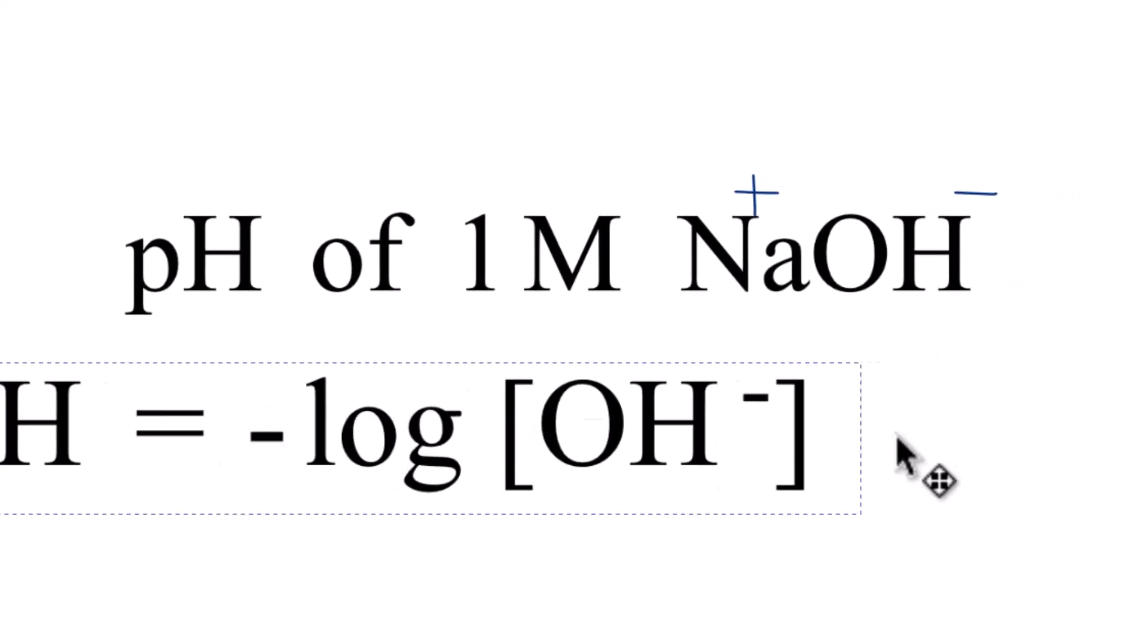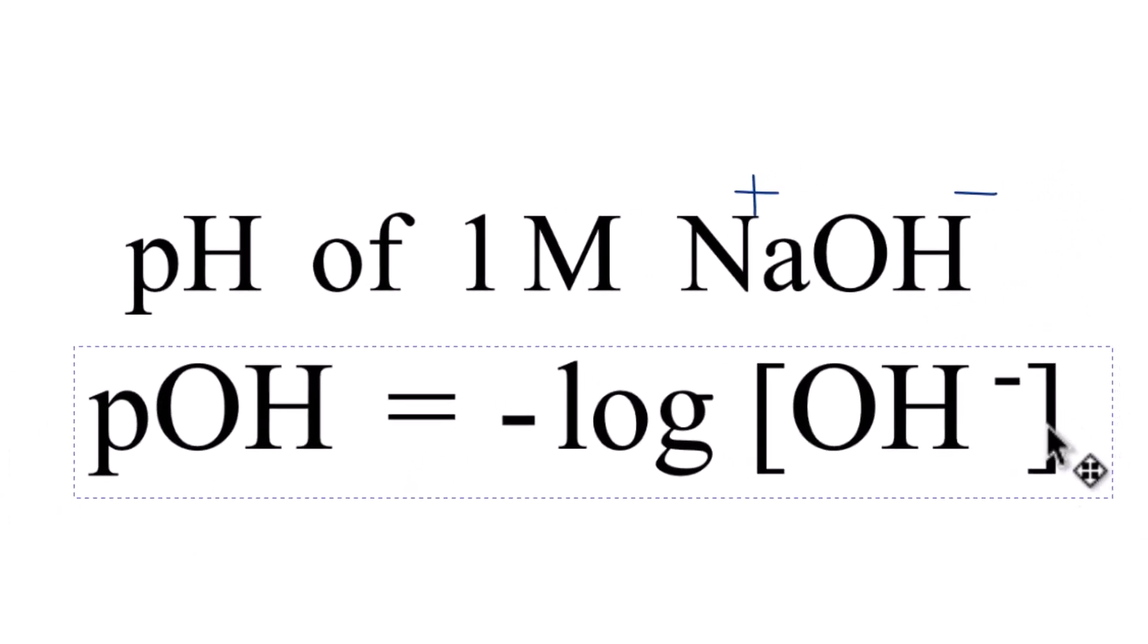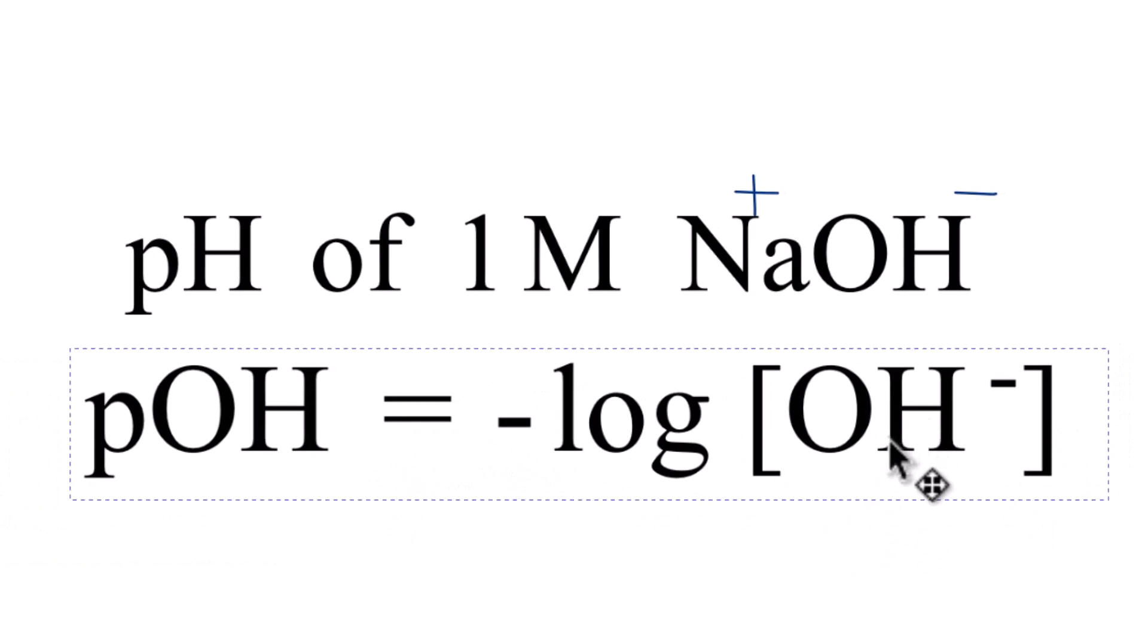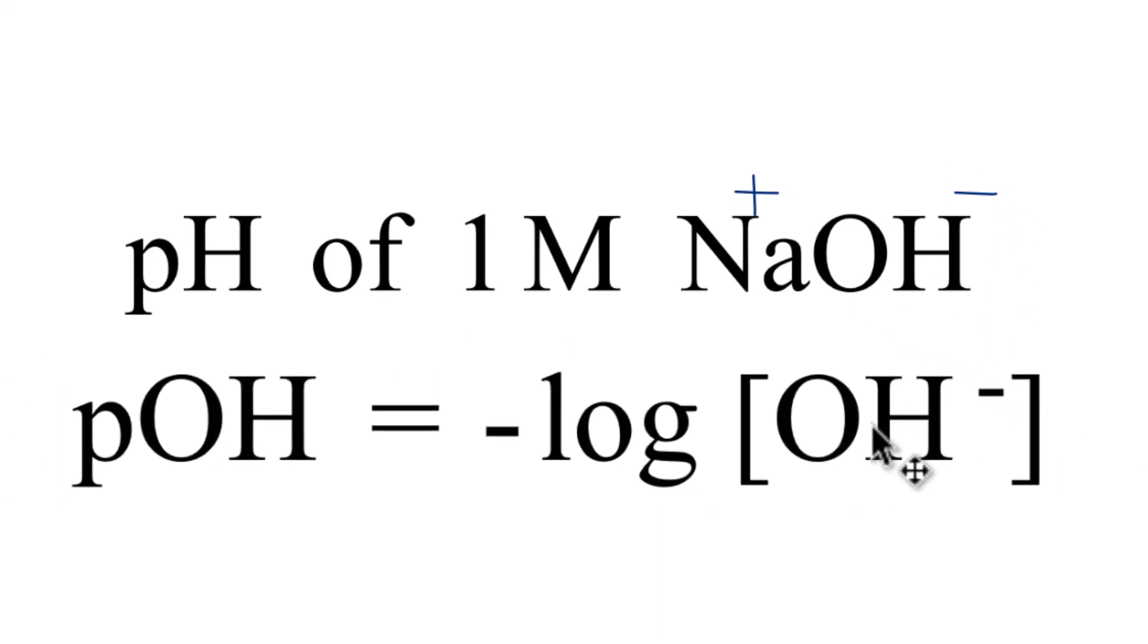That means we need to use the equation for pOH. It's pretty much the same except we're dealing with hydroxide. We take the negative log of the concentration, and that's just 1. So we're taking the negative log of 1, and the log of 1 is 0.